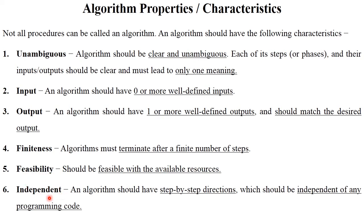The last one is independent. Algorithm should have step-by-step directions and should be independent of any programming code. If you write the algorithm in a proper manner, that algorithm can be implemented in any programming language — either in C, C++, or Java etc. So it will be independent. These are the properties or characteristics of a proper and finite algorithm.